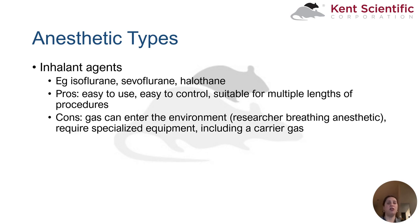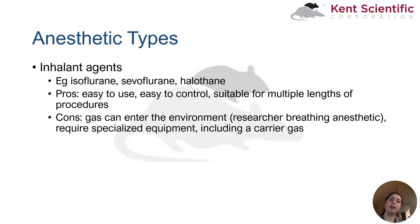Inhalant anesthetics are often the preferred type of anesthesia. They are easy to use and easy to control. Although all anesthetics will induce off-target effects to some extent, it is easier to mitigate this with inhalant anesthetics — for example, by reducing the anesthetic percentage. They are also suitable for multiple lengths of procedures, from a 5-minute biopsy to an hours-long surgery. However, anesthetic gas can enter the environment, resulting in researchers breathing it in. Anesthetic gas also requires some specialized equipment, such as a vaporizer, compressed gas tank and its accessories, and carrier gas.